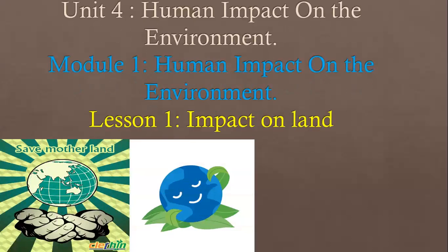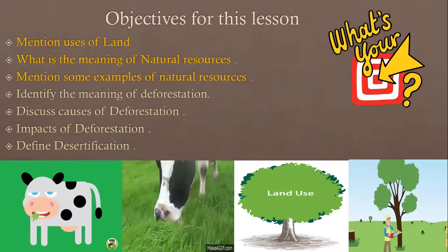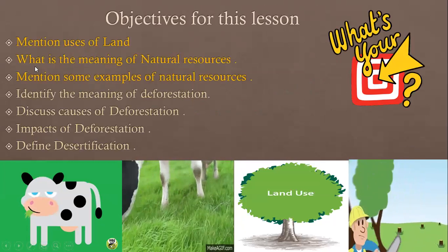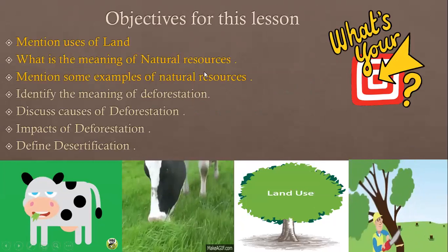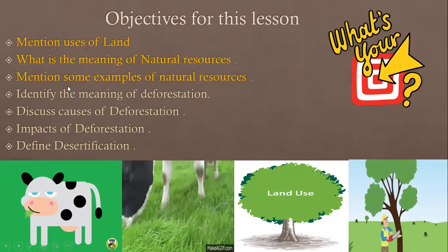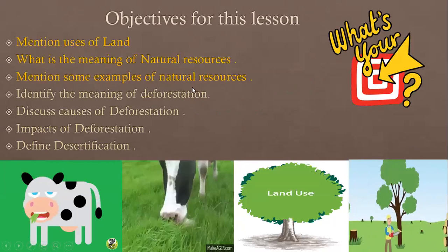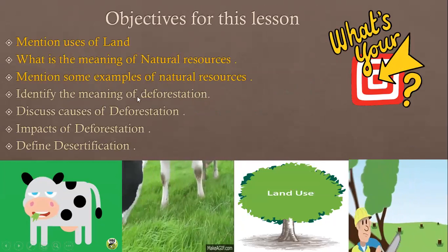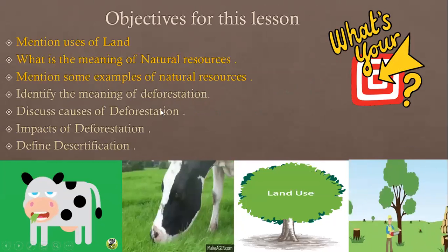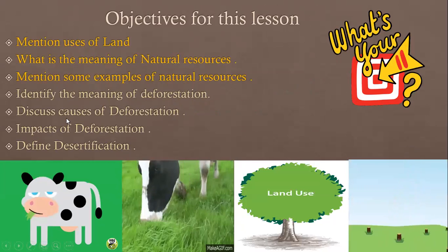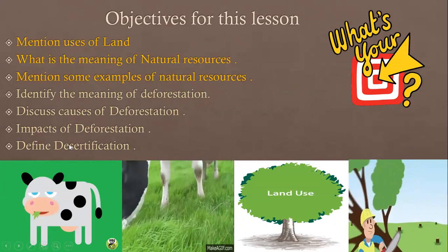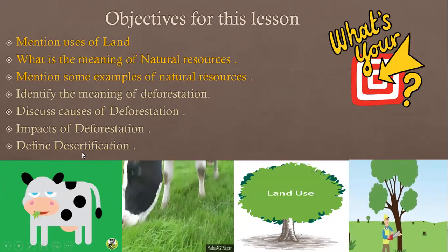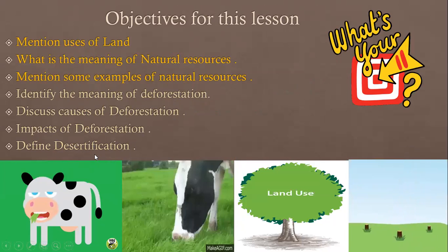Our objectives for today are: first, to mention the uses of land; to define the meaning of natural resources; to mention some examples of natural resources; to identify the meaning of deforestation; to discuss the causes and impacts of deforestation; and to define the meaning of desertification.